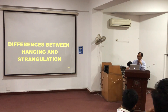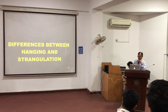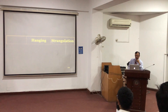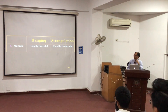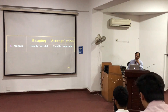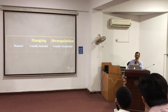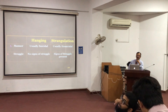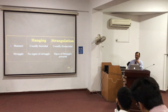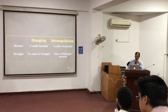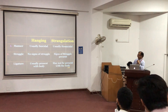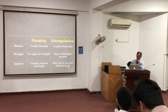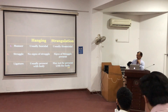What are the differences between hanging and strangulation? Regarding the manner of death, in hanging it is usually suicidal, whereas in strangulation it is usually homicidal. Regarding signs of struggle, in hanging there will be no signs of struggle, whereas in strangulation there can be signs of struggle. About the ligature, in hanging it will usually be present with the body, whereas in strangulation it may or may not be present.